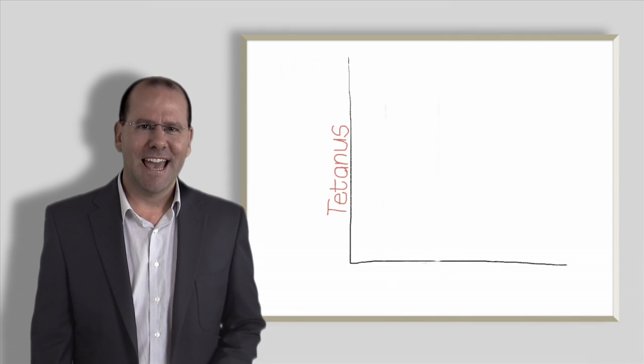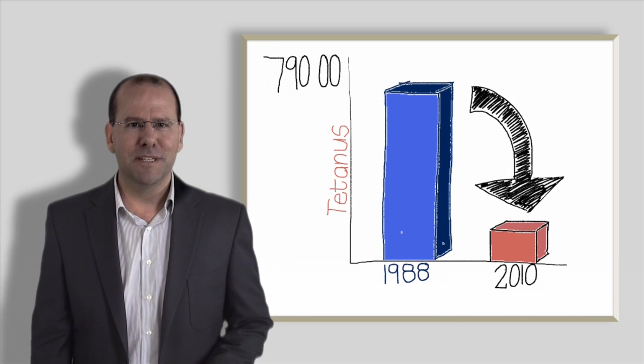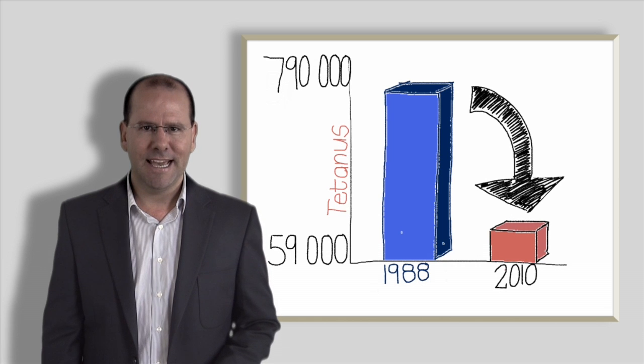Fact number nine. Annual deaths from neonatal tetanus have fallen to an estimated 59,000. This is down from 790,000 deaths in 1988.